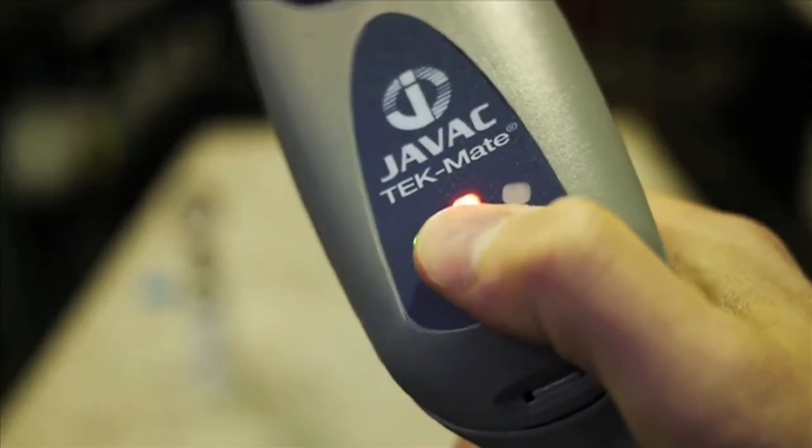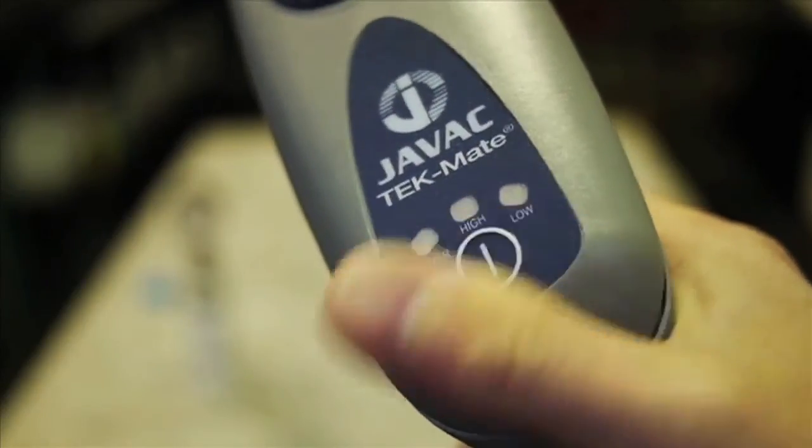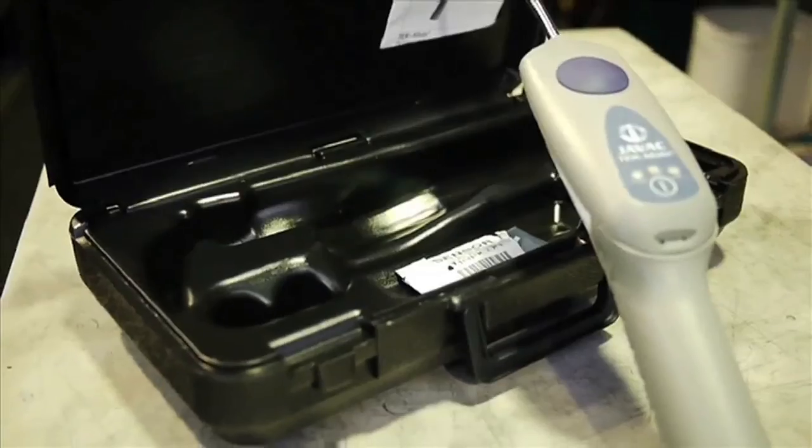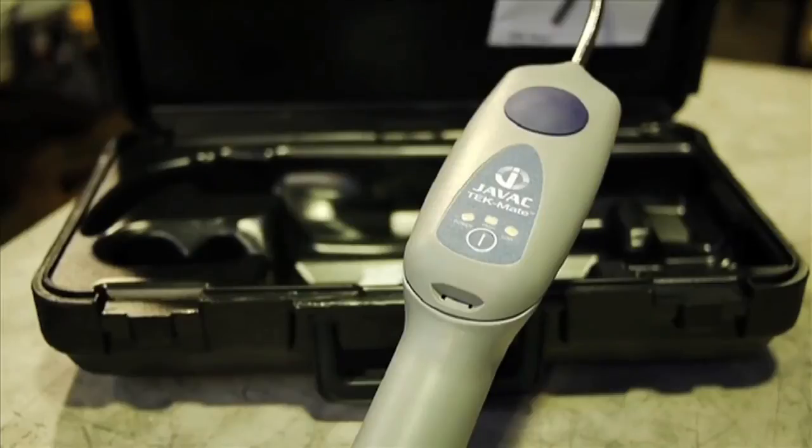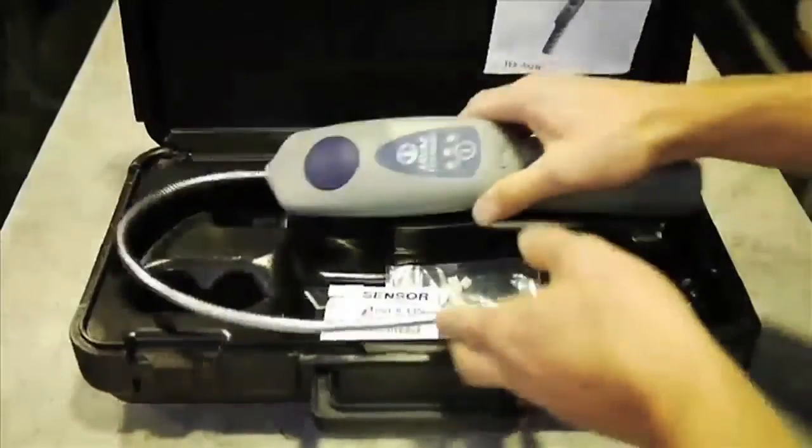To switch the Techmate off, simply press and hold the power button, and there we have our quick start guide to the Techmate. The JVAC Techmate combines sophisticated technology with durability for an instrument with outstanding sensitivity that is laboratory accurate and toolbox tough.